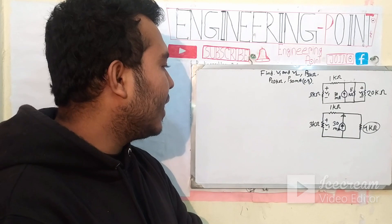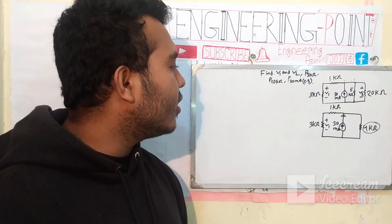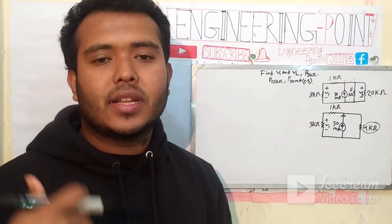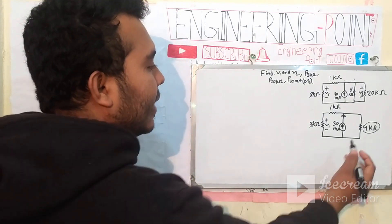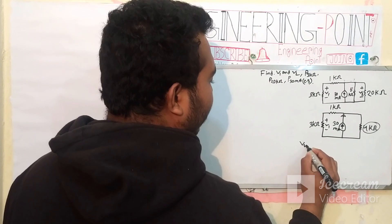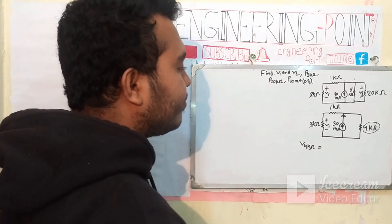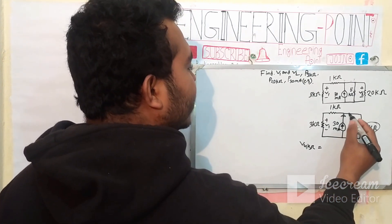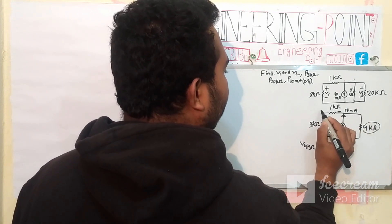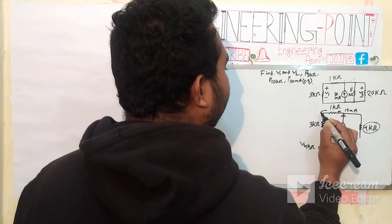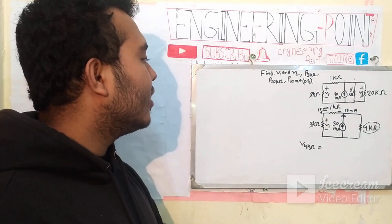So we need to use the 4 kΩ voltage. We need to make this voltage — we need to use the 20 kΩ voltage. The voltage is 4 kΩ. We need to see: the current is 15 mA and the current is 15 mA. We need to call the resistance during the transition.